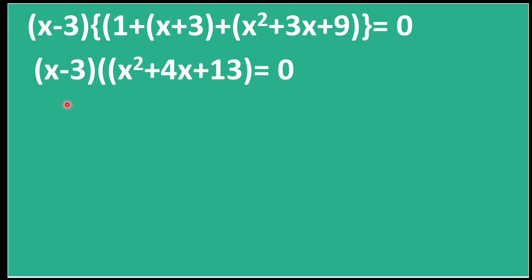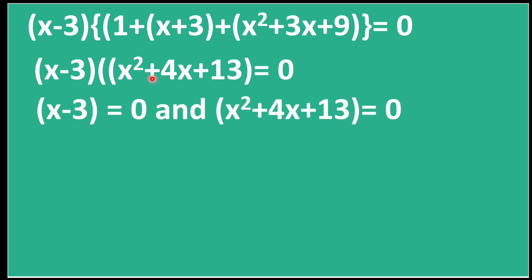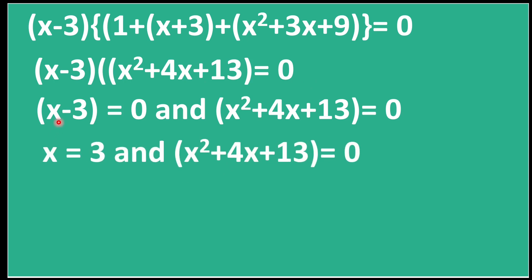Comparing each factor to zero: x − 3 = 0, giving x = 3; and x² + 4x + 13 = 0, which is a quadratic equation that we will solve using the quadratic formula.